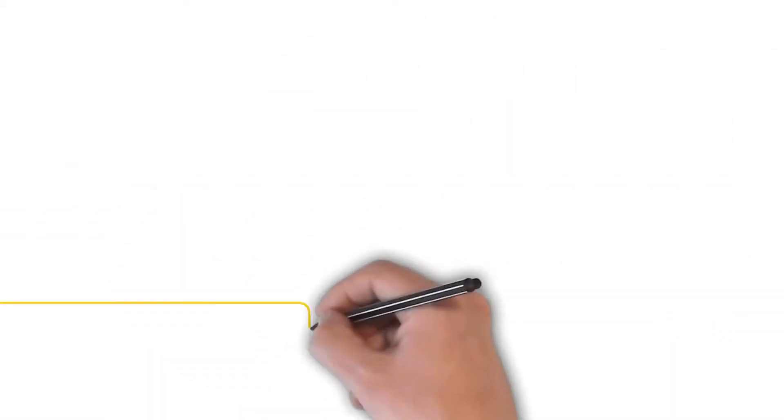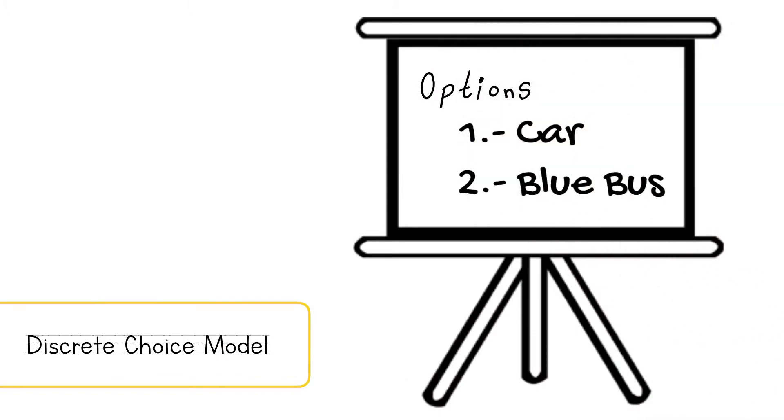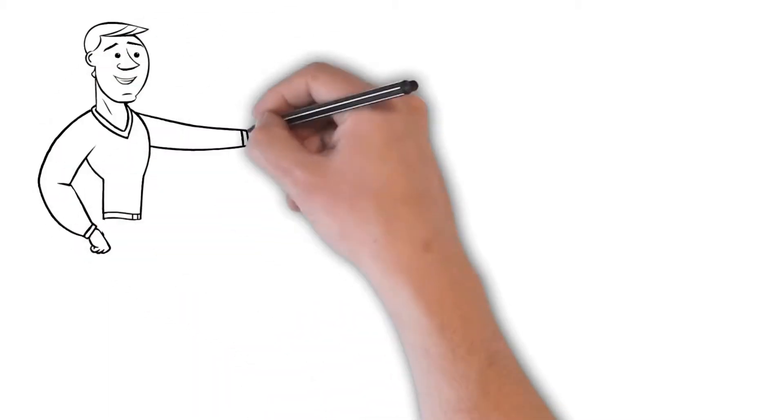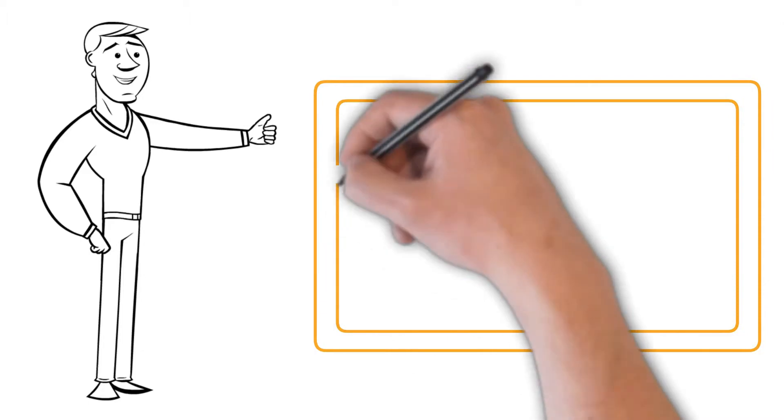Joe chooses a discrete choice model, since the alternatives presented are listed in a finite list. This model establishes that the decision maker will always choose the best option, which is why it is formed by a utility maximization equation.